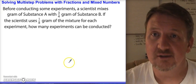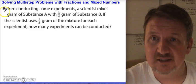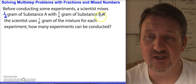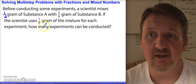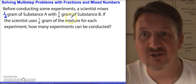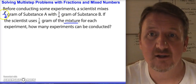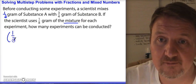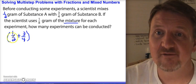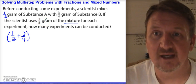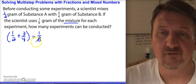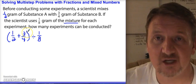Let's look at the next problem. It says: before conducting some experiments, a scientist mixes one-half gram of substance A with three-quarter grams of substance B. If the scientist uses one-eighth gram of the mixture for each experiment, how many experiments can be conducted? He's saying one-eighth of the combined mixture. So I know I need to combine substance A with substance B — I'm going to add one-half with three-quarters, and then divide that answer by one-eighth.